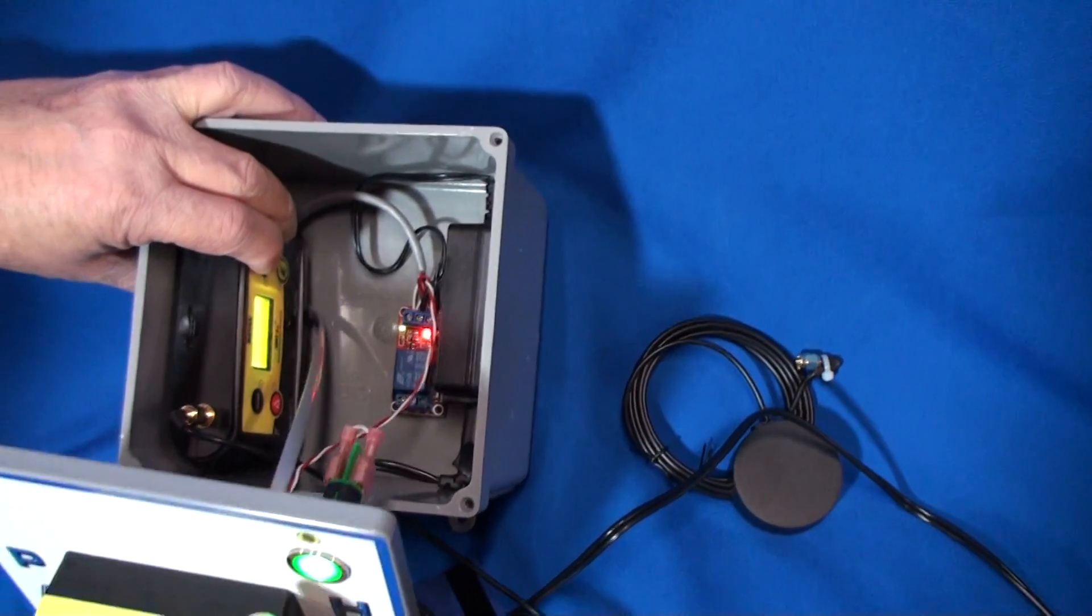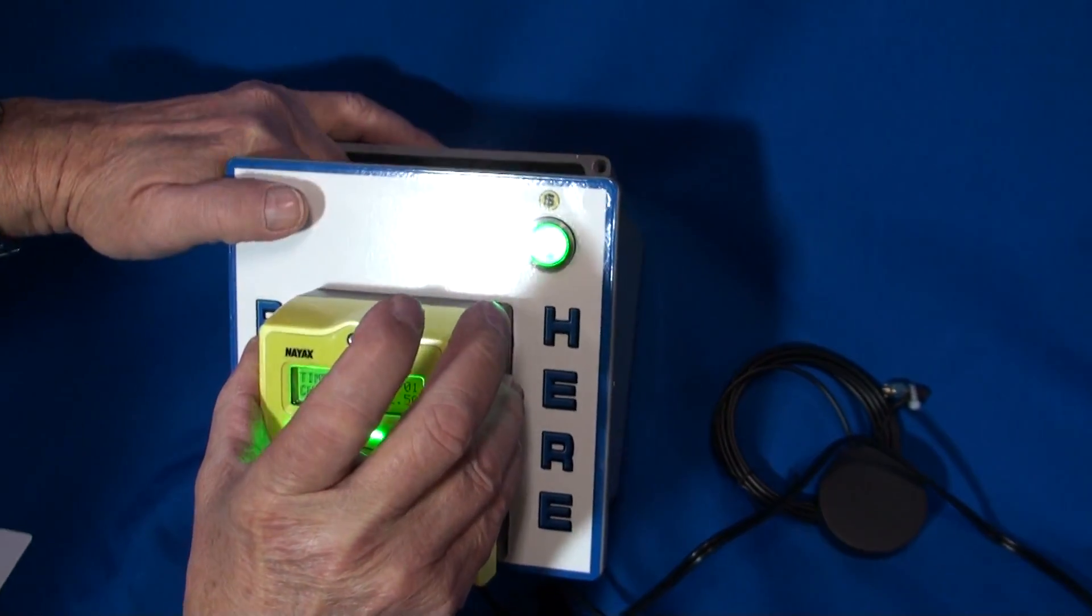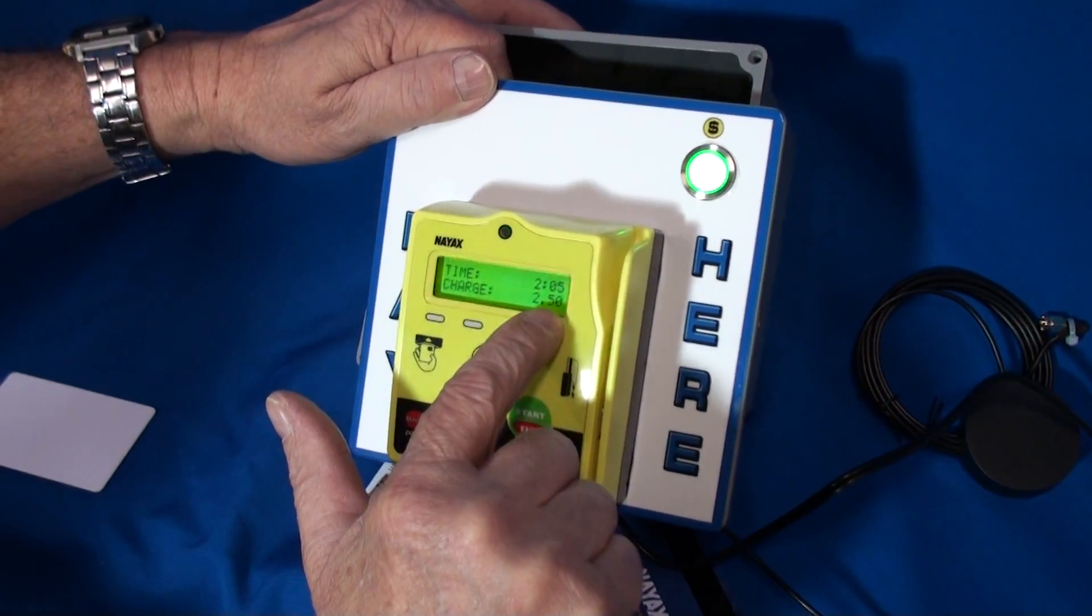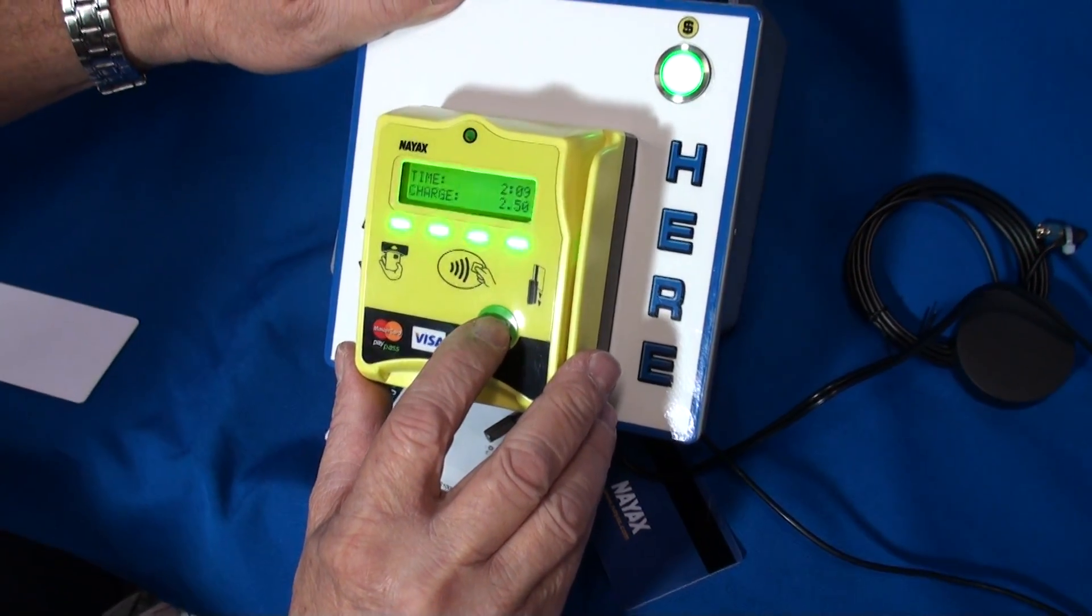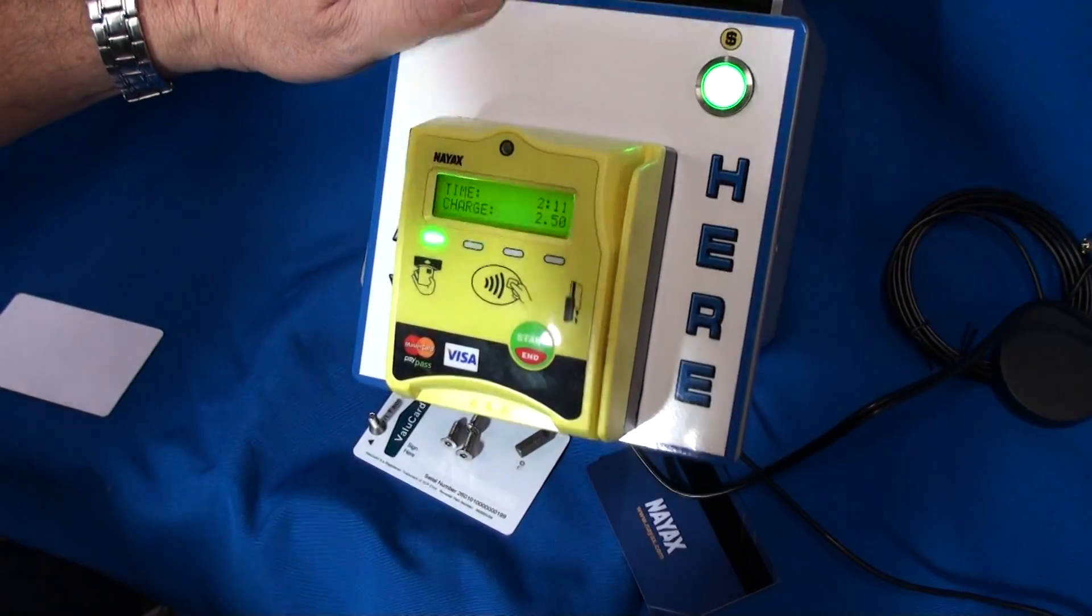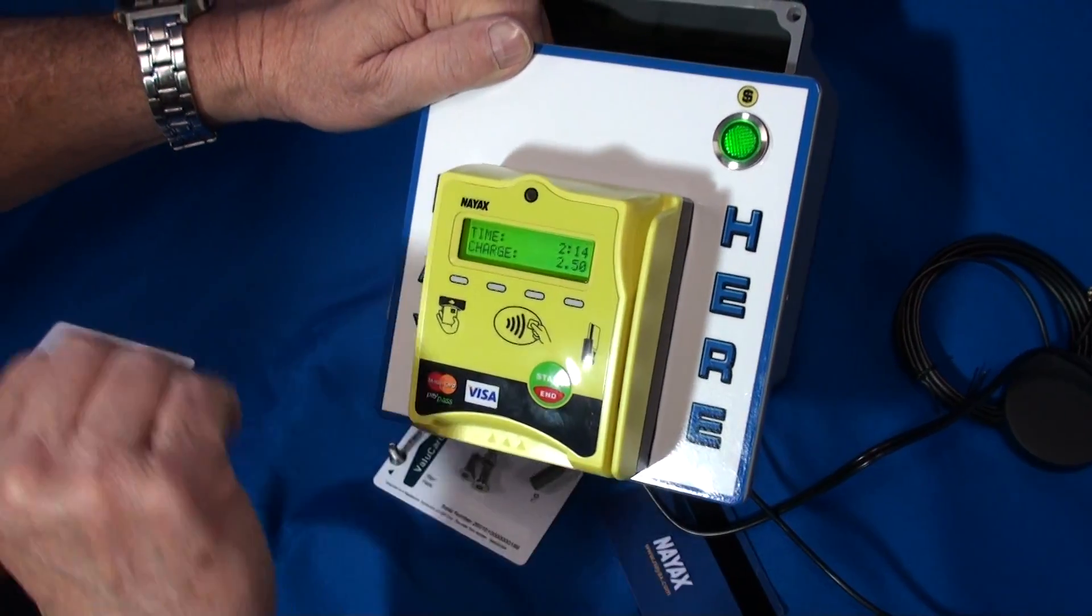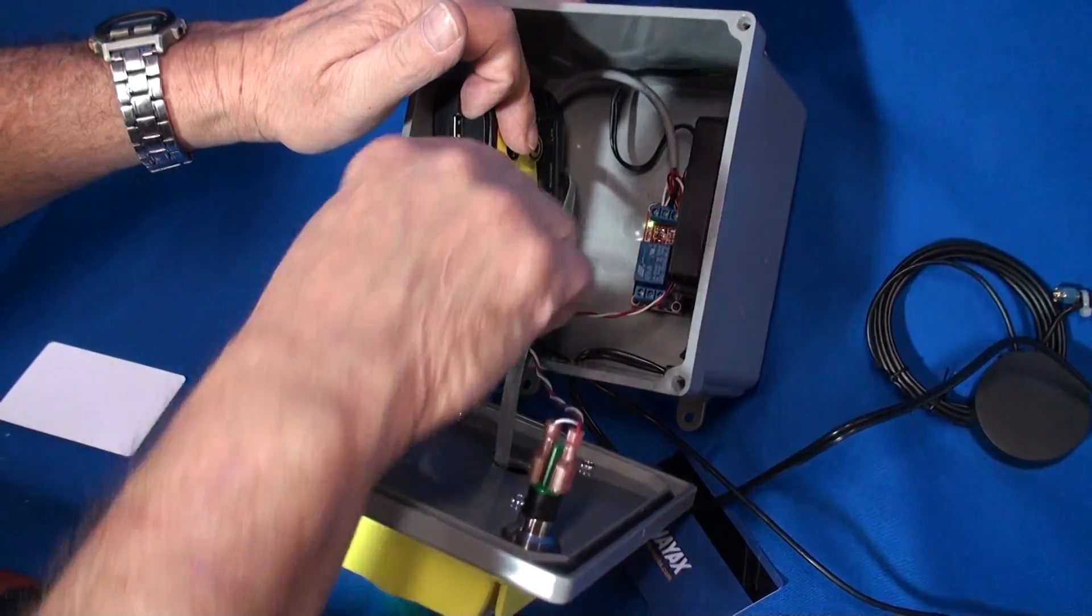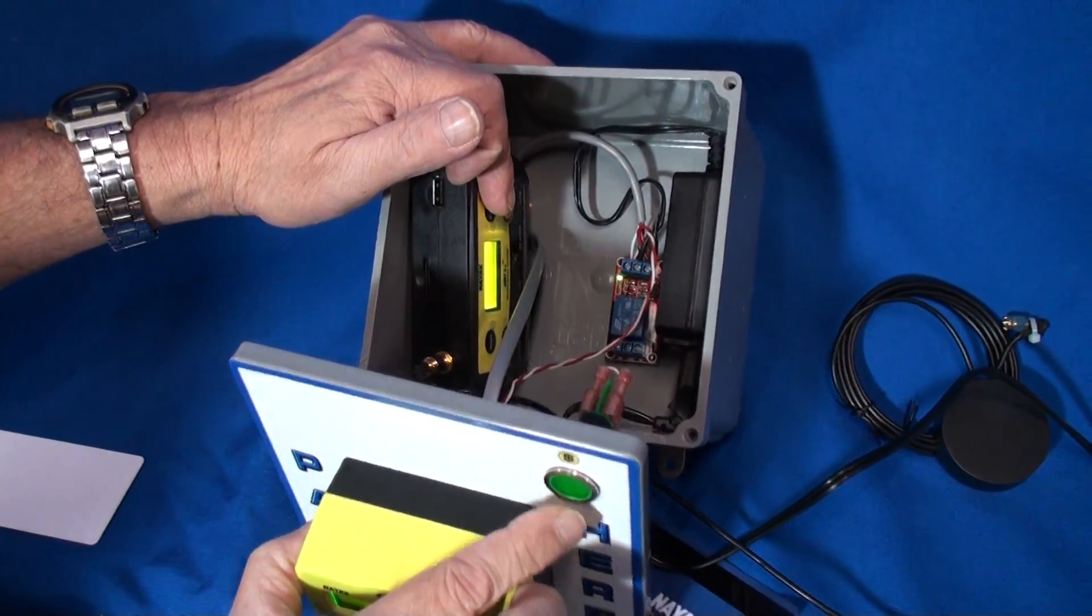I'm going to show what happens when you stop it. Right now it's charged two dollars and fifty cents, and so long as I stop it before the five-minute ceiling where it clicks over to the next two dollars and fifty cents, it just stops the unit and charges you that two dollars and fifty cents. The red light's off on the relay. It has stopped vending. The green light's off on the front.